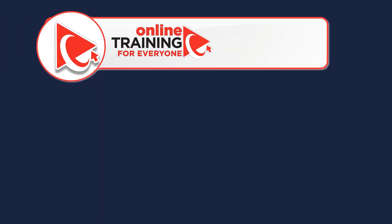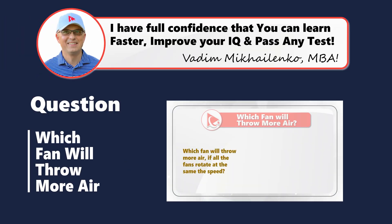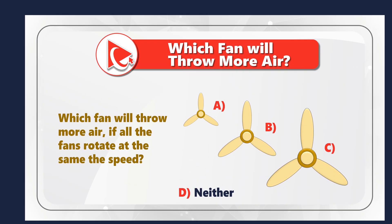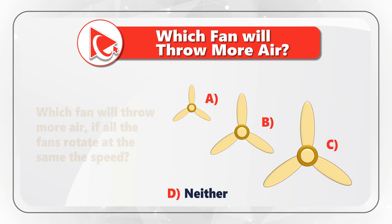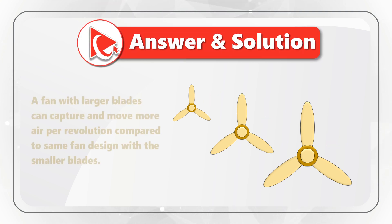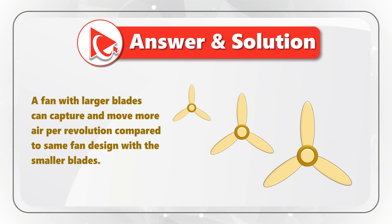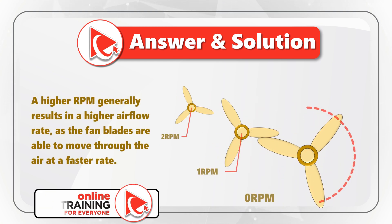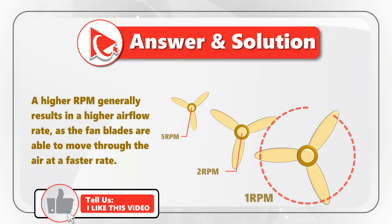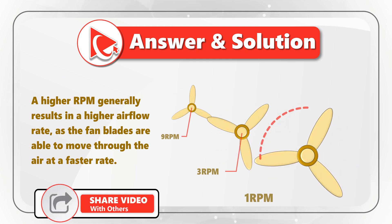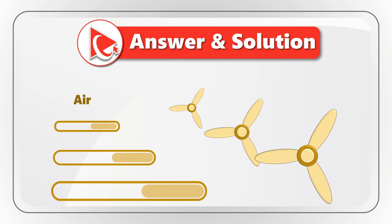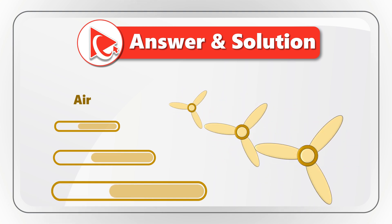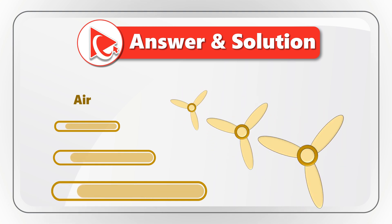Are you ready? I am moving forward to share with you my version of the answer. If you have a better way to solve it, please make sure to post in comments. As you might be well aware, there are two key factors to help determine the airflow rate. The first one is the size of the fan's blade. The second one is rotational speed of the fan, which is measured in RPMs — revolutions per minute. A fan with larger blades can capture and move more air per revolution.